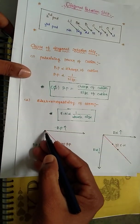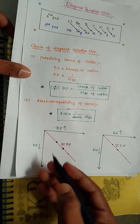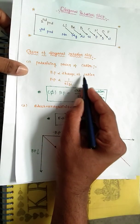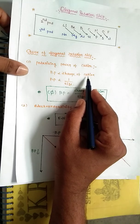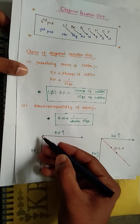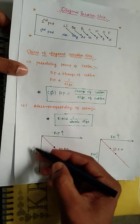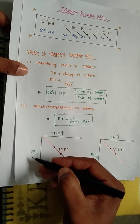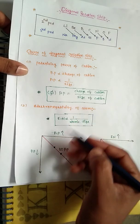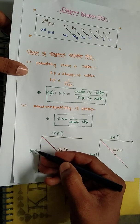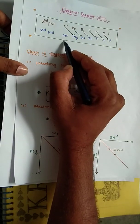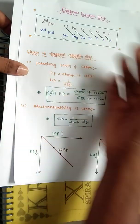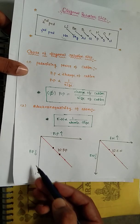In groups, moving top to bottom, the charge of the cation remains the same, but the size increases. For example, lithium to sodium going top to bottom, size increases but charge is the same. Therefore, the polarizing power decreases going top to bottom in a group.